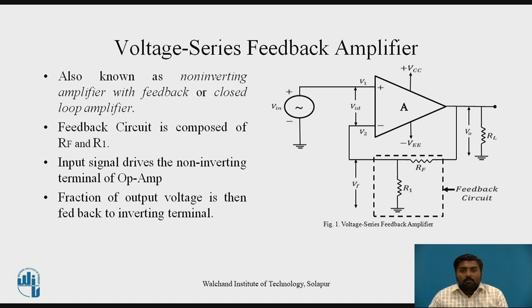Figure 1 shows the Voltage Series Feedback Amplifier. If you see, there are two parts. The first one is the op-amp, denoted by A, and the second is the feedback circuit composed of RF and R1. It is also known as a non-inverting amplifier with feedback, because Vin is applied to the non-inverting terminal of the op-amp and the feedback circuit is used.